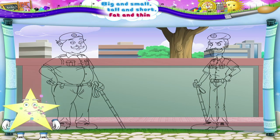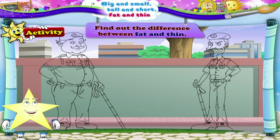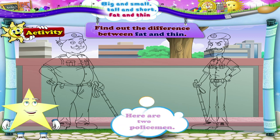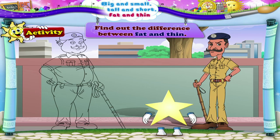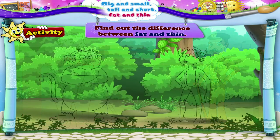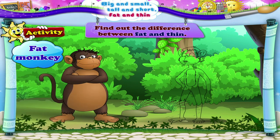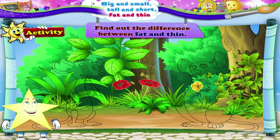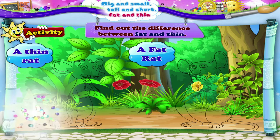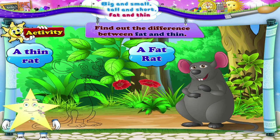And now one last activity to find out the difference between fat and thin. The moment you click on the right description, the picture will get colored. Here are two policemen — you have to find the thin policeman. Thin policeman. Now, fat monkey. Right again! Finally, two rats: a fat rat and a thin rat. Fat rat. Excellent, Tari!